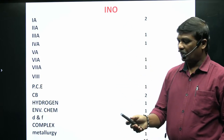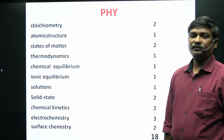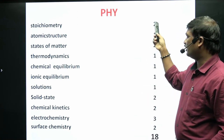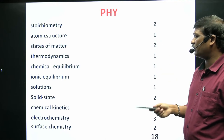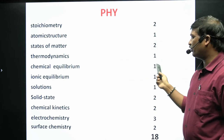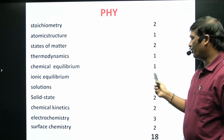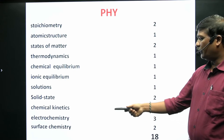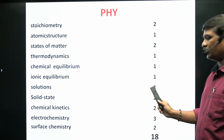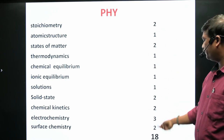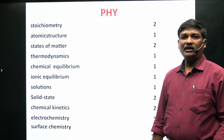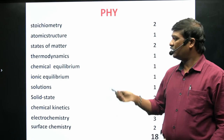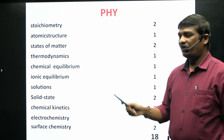For physical chemistry, we got 18 questions total (36% of the paper). Chapter-wise: stoichiometry 2 questions, atomic structure 1 question, states of matter 2 questions, thermodynamics 1 question, chemical equilibrium 1 question, ionic equilibrium 1 question, solutions 1 question, solid state 2 questions, chemical kinetics 2 questions, electrochemistry 3 questions, and surface chemistry 2 questions.